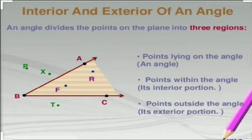Now, exterior means the outer part of your angle. The exterior points are marked with green color — that is point P, point X, and point T. These three points are your exterior points. The points on the arms of the angle are point A, point B, and point C.